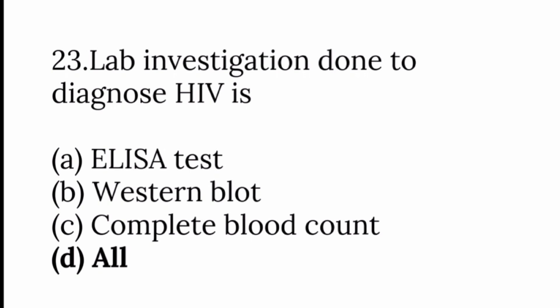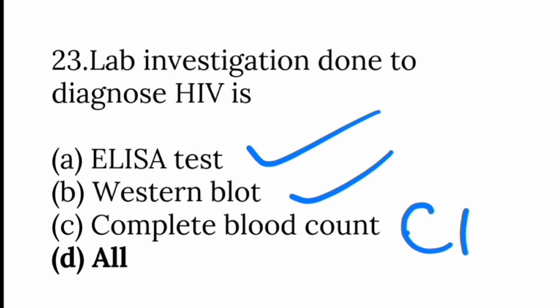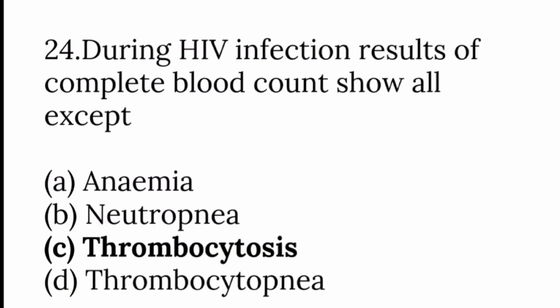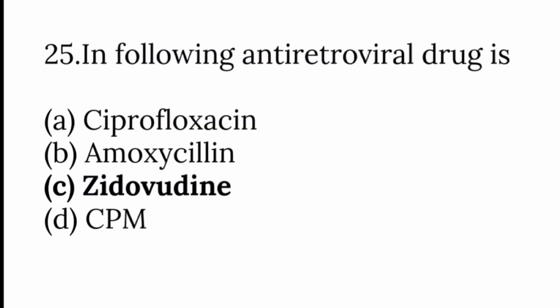Lab investigations done to diagnose HIV include the ELISA test, Western blot test, and complete blood count with CD4 count — so the answer is all of the above. During HIV infection, complete blood count results show all except thrombocytosis, which means an excess in platelet count due to disease. The antiretroviral drug is zidovudine.